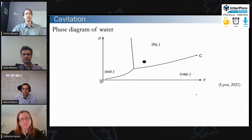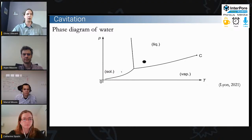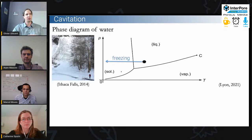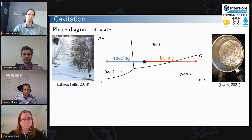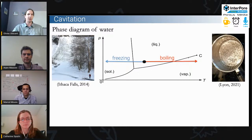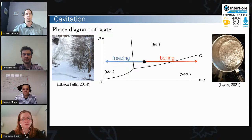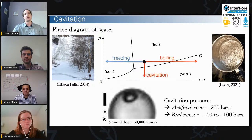What is cavitation and why does it happen here? It's useful to go back to the thermodynamic phase diagram of water. We know that lowering temperature freezes water; increasing temperature boils it — we cross the liquid-vapor phase transition line. But we can cross the same line by decreasing the pressure instead of increasing the temperature. When we do this, that's what we call cavitation.